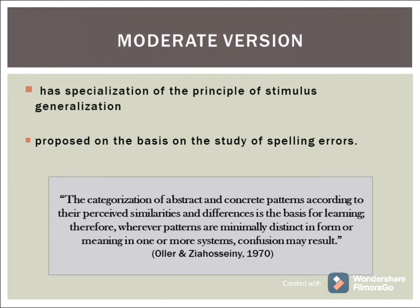Lastly, we have the moderate version, or subtle differences of the CAH, according to Ziosceni 2006. In this model, rather than causing difficulty, the differences of L1 and L2 items are more likely to be noticed and categorized. This perspective is based on the principle of stimulus generalization, which states that the more similar two stimuli are, the more likely a person is to respond to them as if they were the same stimulus. Thus, when the learner is faced with such a condition, they may generalize a response learned to one stimulus. This in turn could create confusion for the learner. The moderate version of CAH was based on the study of spelling errors.